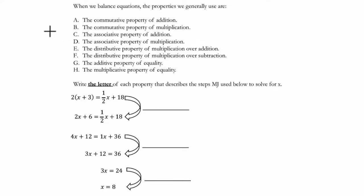All right, so in this video, this question seems to have a lot going on. So let's just start to break down what it's asking, and that happens right here. It says, write the letter of each property that describes the step MJ used below to solve for X.